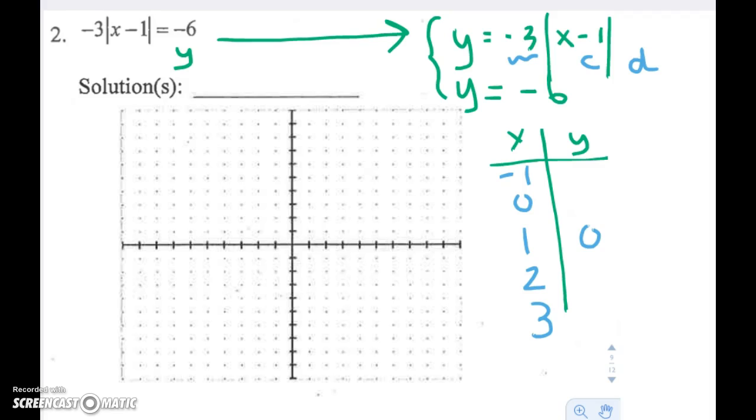So if I go ahead and do that, what I get at 0 is y equals negative 3. If x equals negative 1, y equals negative 6. And on the other side of my vertex, these values are just going to reflect or repeat. So let's go ahead and plot this absolute value function.